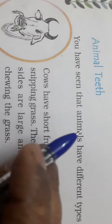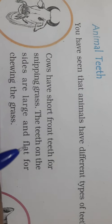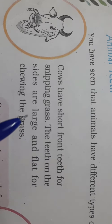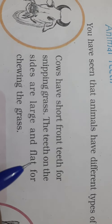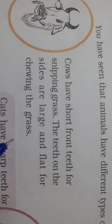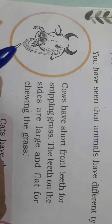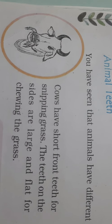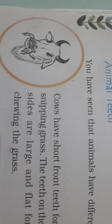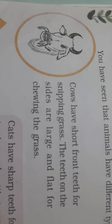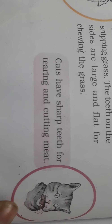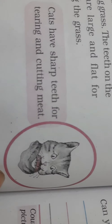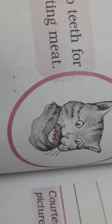The cow's front teeth are used to pull and snap grass, and the side teeth are large and flat so it can chew the grass. Cats have sharp teeth for tearing and cutting meat — cats have sharp teeth so they can cut and eat meat.